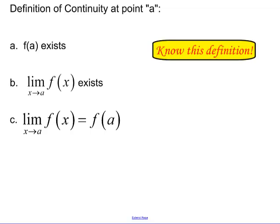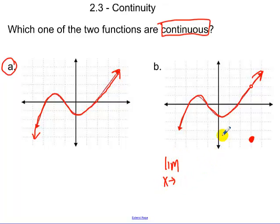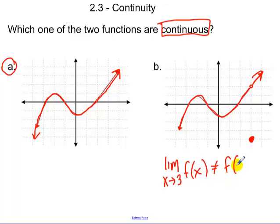Going back, A is continuous because for each one of these function values the limit also exists at that function value. But for B, the limit exists but it's not continuous because the limit as we go to 3 of our function does not equal F of 3, using the third part of our definition.